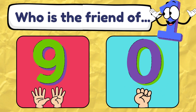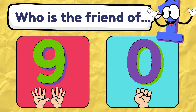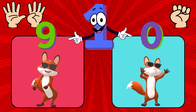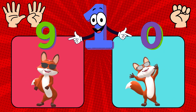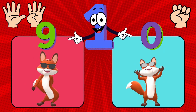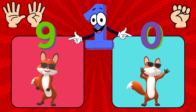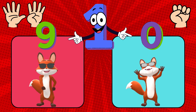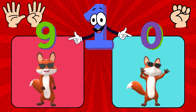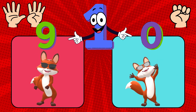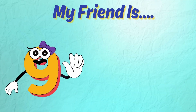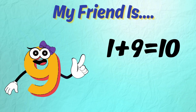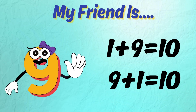Last up. Who is the friend of number 1? This should be easy. Do the matching dance! The friend of 1 is 9. 1 plus 9 equals 10, so of course 9 plus 1 equals 10 too.